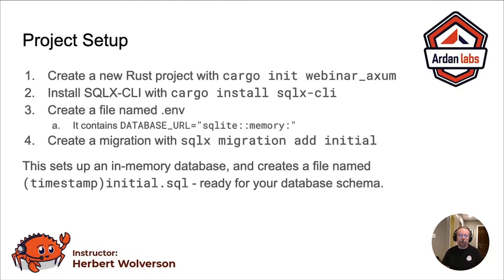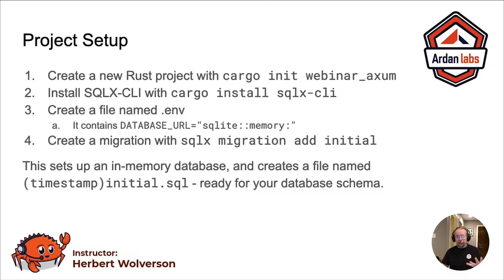Setting up the project follows the pretty standard template where you create the project with cargo init. In this case, in the repo, I'm using a project named webinar-axim. Run the command line tool cargo install sqlxcli, and create a file named .env. This represents the environment variables that you typically use to share secrets and configuration information between your deployed systems. .env is a convention used across a lot of platforms — you put your environment variable declarations in it, and if the environment variable is not set, these variables from this file get used instead. And lastly, you use the command sqlx migration add, and we'll name it initial, which will create an empty SQL file and tie it into the sqlx migration system.